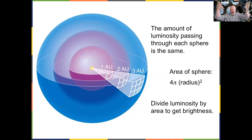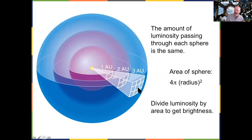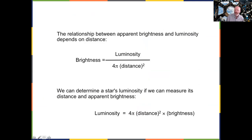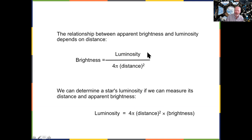As light goes further and further from a star, it's going out in all directions - in three dimensions - so it spreads out. The luminosity spreads out and it becomes dimmer and dimmer. It dims by the square of the distance. If something is two times as far away, you're getting one-fourth of the light. If it's three times as far away, you're getting one-ninth. We have this luminosity-brightness-distance relationship: luminosity divided by distance gives us the brightness.